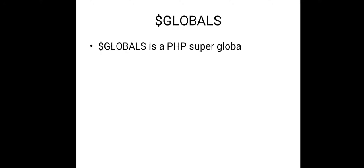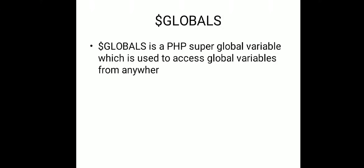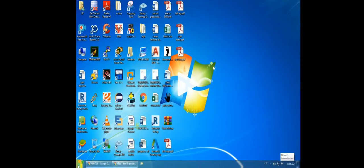$GLOBALS is a PHP superglobal variable used to access global variables from anywhere in a PHP script — inside a function, a method, or outside the function. PHP stores all global variables in an array called $GLOBALS, and the index of that array is the variable name, so you can access any global variable using that index.